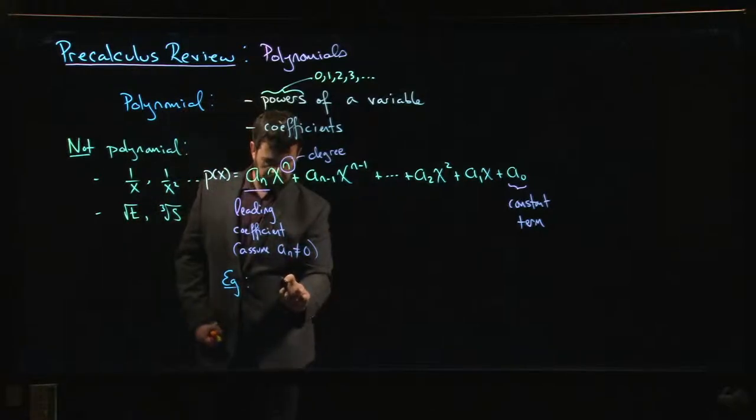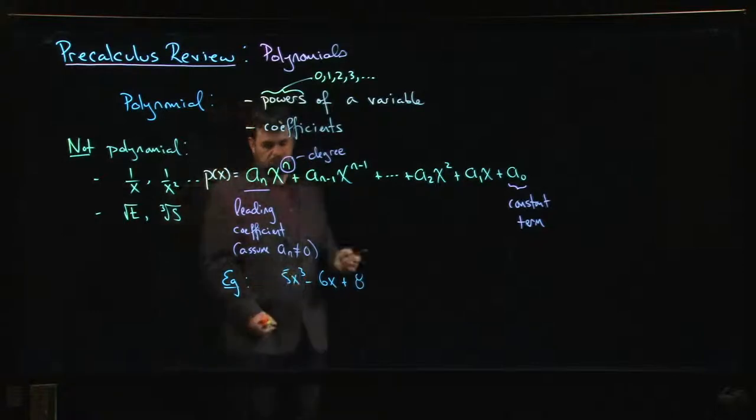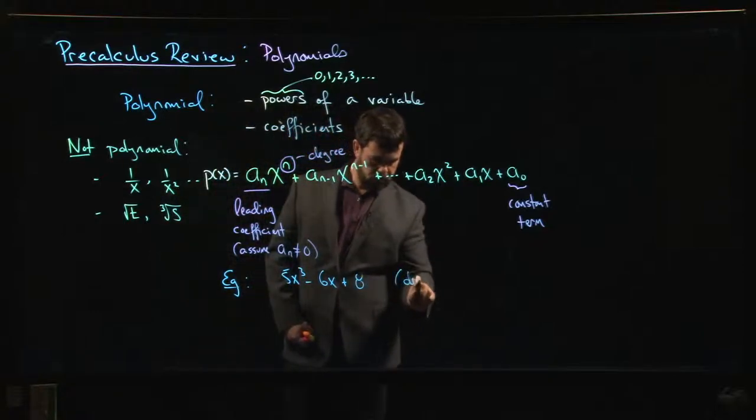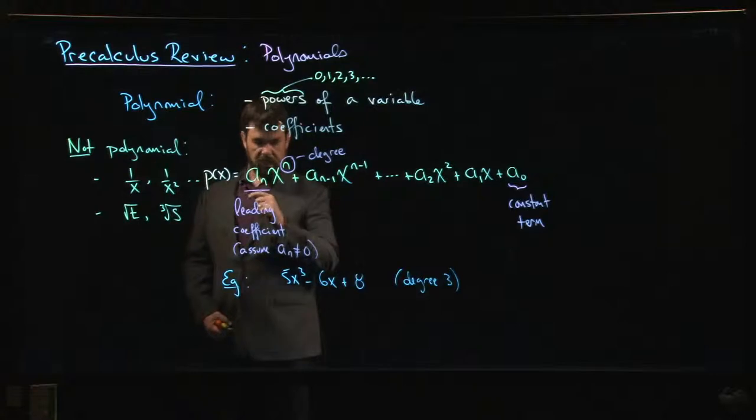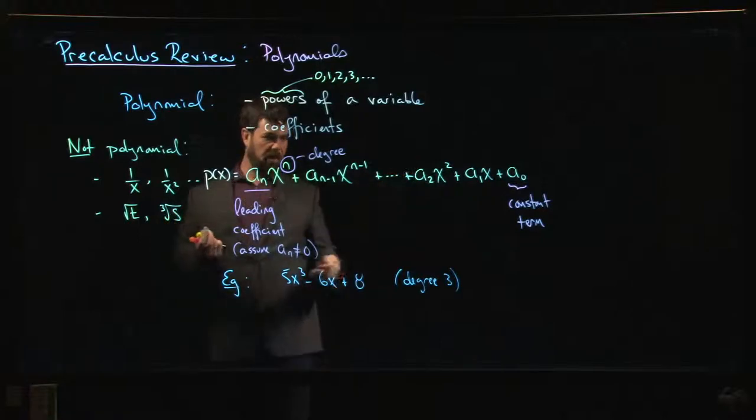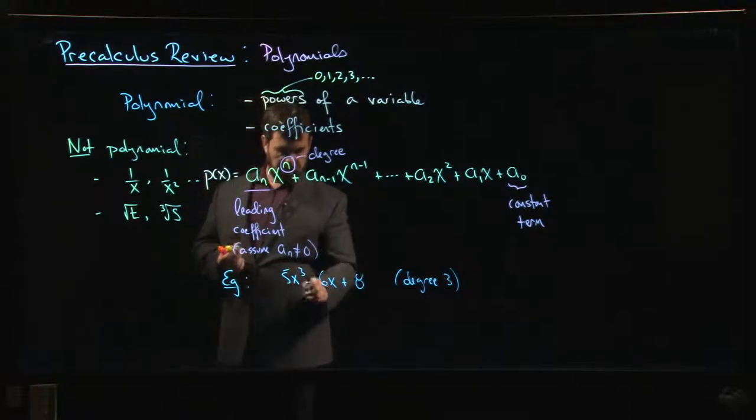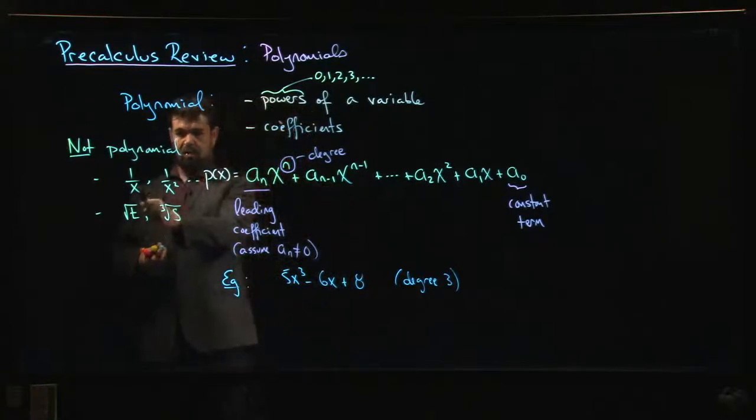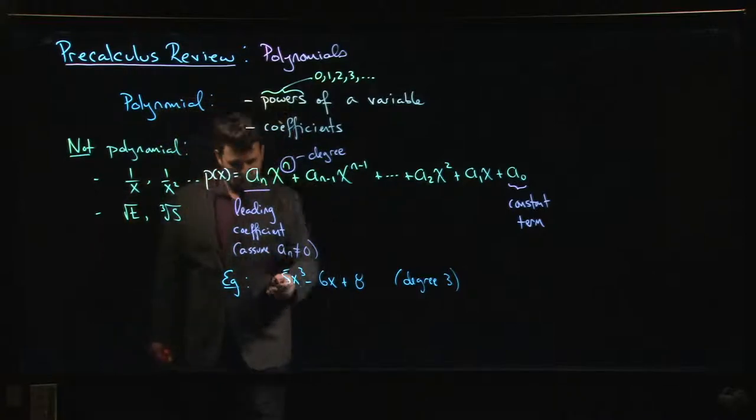We could write down something like 5x cubed minus 6x plus 8. This is an example of a degree 3 polynomial because the highest power of x that I see is 3. There is no x squared term. That's fine, you don't need to have every single power of x showing up in a polynomial. The terms that don't appear are just ones where the coefficient happens to be zero. But notice that everything is just a power of x or a constant. There's no negative powers, no fractional powers, nothing like that.